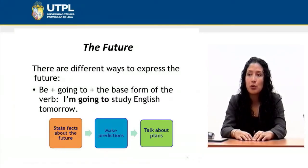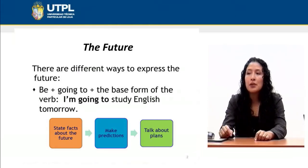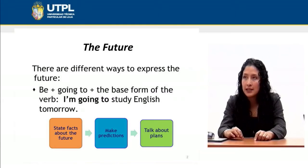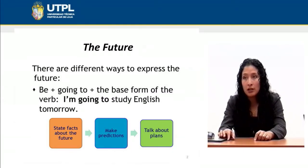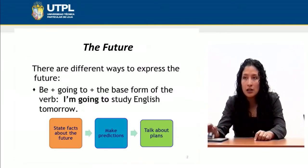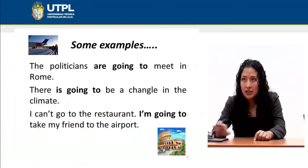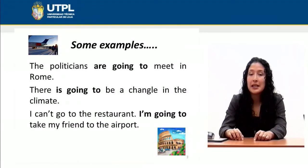Let's see one example with the first one: 'I'm going to study English tomorrow.' 'I'm going to' expresses a future fact or a future event — it states facts about the future, makes predictions, or talks about plans. There are different ways to express the future, for example 'will,' but here I have included just 'going to' in order to start with this explanation.